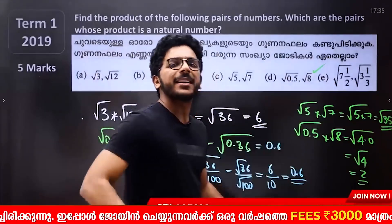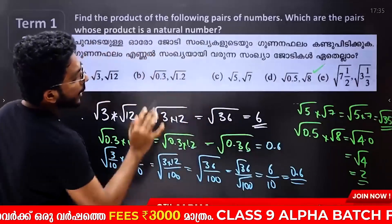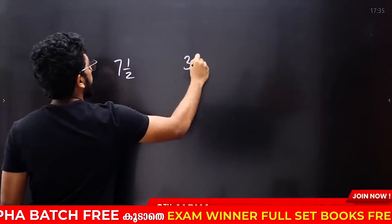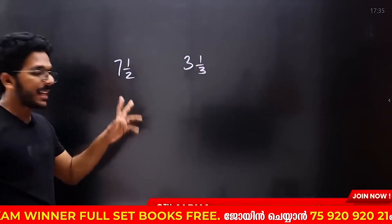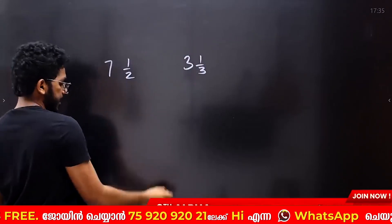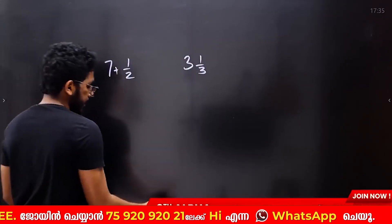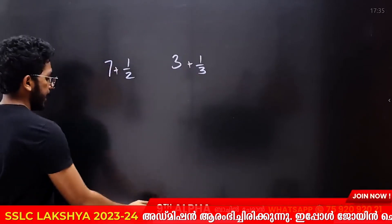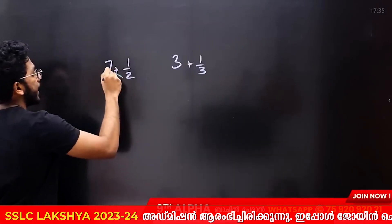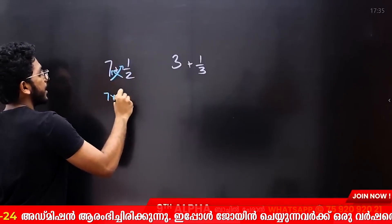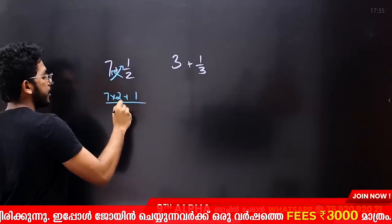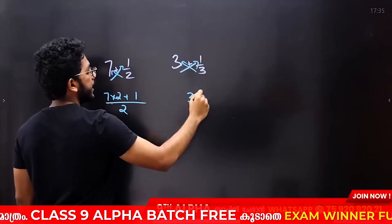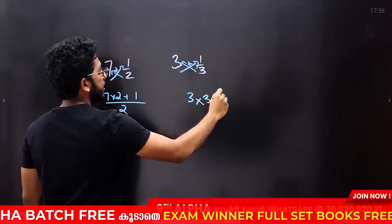The answer involves mixed fractions: 7 and 1 by 2; 3 and 1 by 3. We will expand this. Then 7 plus 1 by 2, and 3 plus 1 by 3. The answer works out as 3 into 3 plus 1 divided by 3.